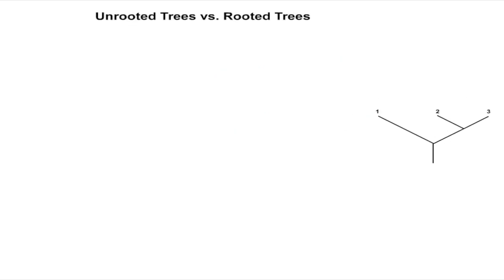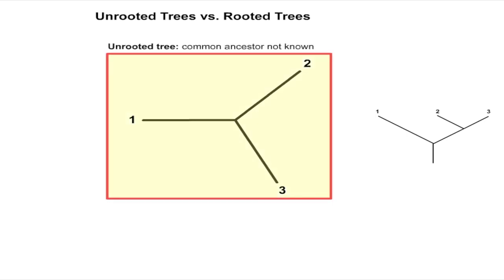There are two kinds of phylogenetic trees: unrooted trees and rooted trees. An unrooted tree is used when the location on the tree of the common ancestor to all the other nodes is not known and specifies only the relationships between nodes on the tree. An unrooted tree therefore says nothing about the evolutionary path that was taken to create the nodes.